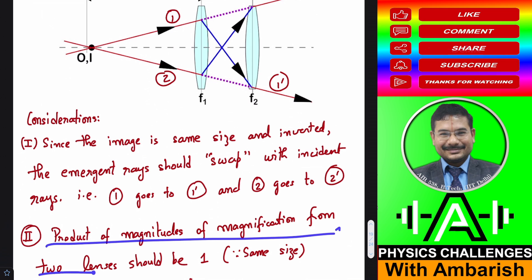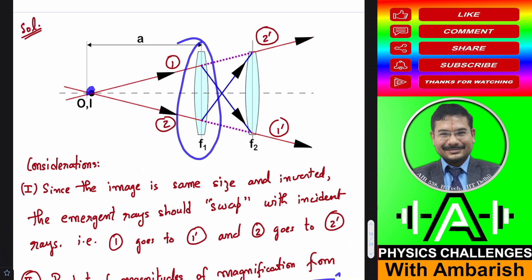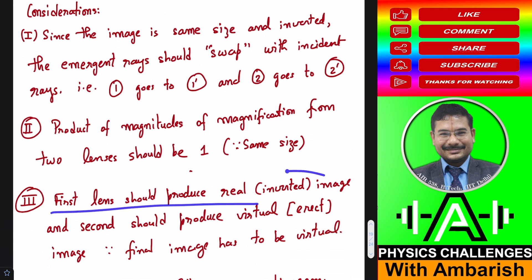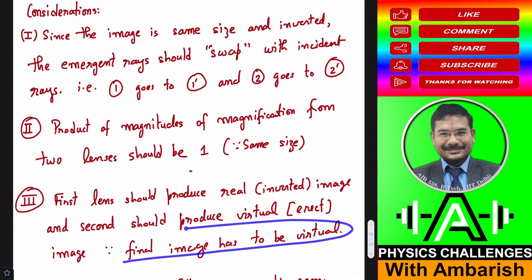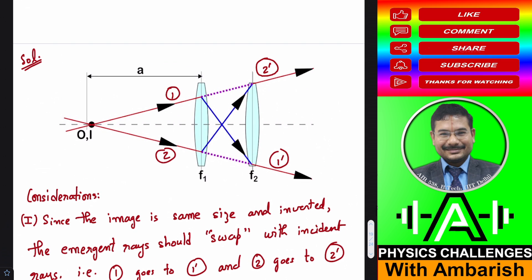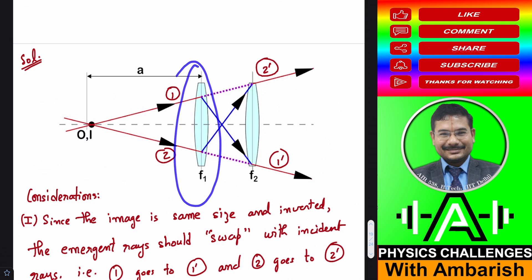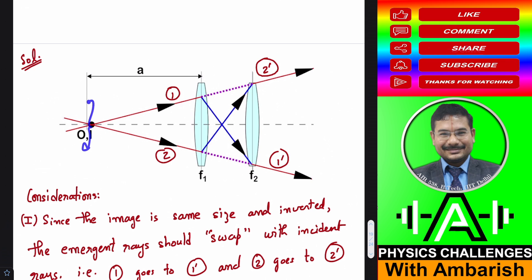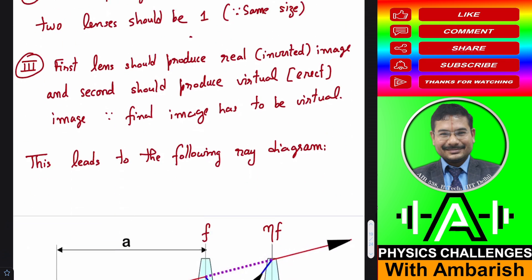There are three key considerations. First, since the image is the same size and inverted, the emergent rays should swap with the incident rays. Second, the product of magnitudes of magnification from the two lenses should be one, since we want the same size image. Third, the first lens should produce a real inverted image and the second should produce a virtual erect image. Since from a converging lens the virtual image is always erect, the inversion must happen at lens one, and lens two produces an erect image — inverted of erect gives the final inverted image.